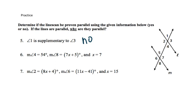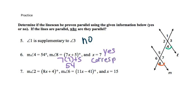Angles 4 and 8 are corresponding. To prove they are corresponding I substitute in: 7 times 7 plus 5 gives 54. They are the same, so I can prove they are parallel. This is a yes because of the corresponding angle converse. Then angles 2 and 6 are also corresponding angles. I substitute: 8 times 15 plus 4 gives 124, and 11 times 15 minus 41 also gives 124. So this is also a yes — corresponding angle converse.